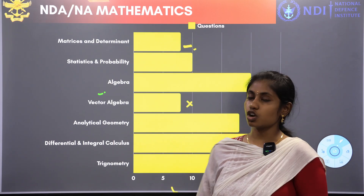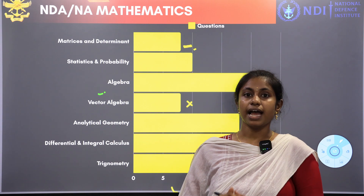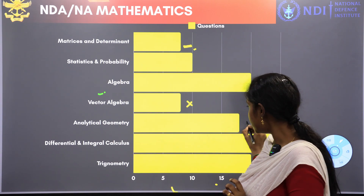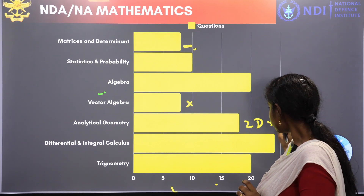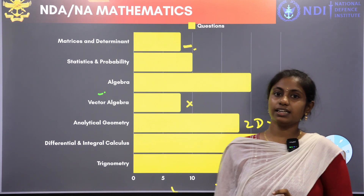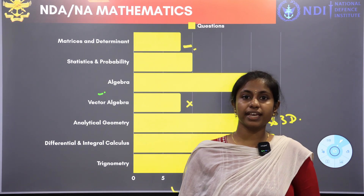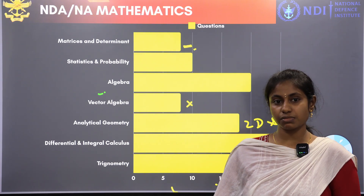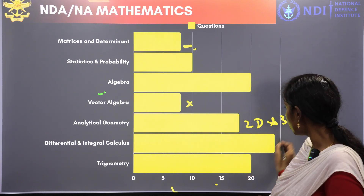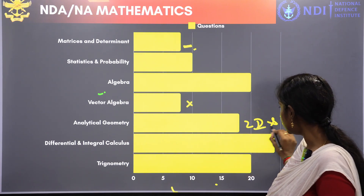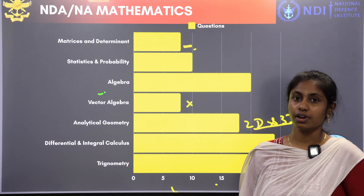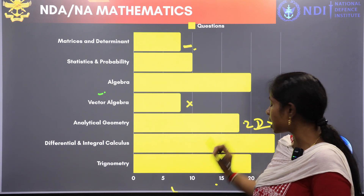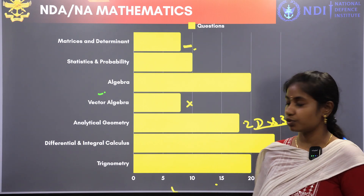Move on to the analytical geometry chapter — it is 2D and 3D. If you want to concentrate on this, the maximum content is from 12th standard CBSE. You have 2D and 3D chapters there. If you concentrate on that, you can clearly answer the questions in this chapter.